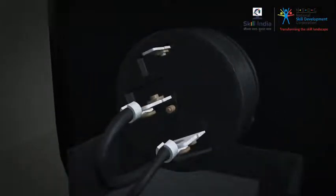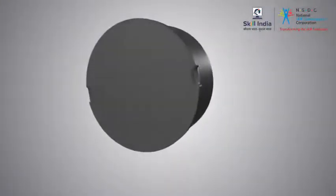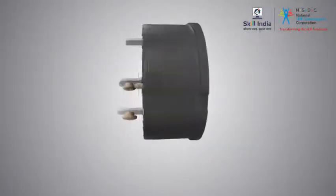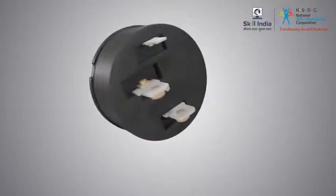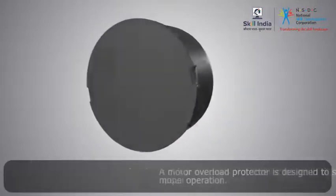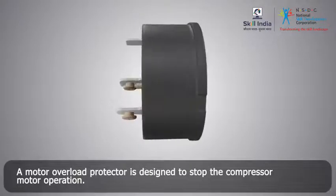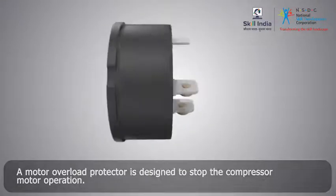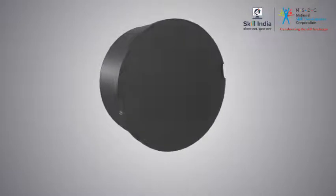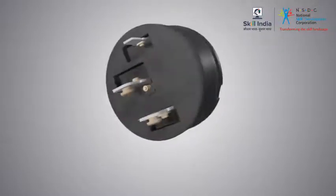What is the role of an overload protector? The compressor, which is normally near the rear side of the refrigerator, generates a great deal of heat. A motor overload protector is designed to stop the compressor motor operation when the compressor is drawing higher amps than the rated amps.